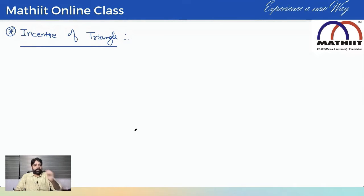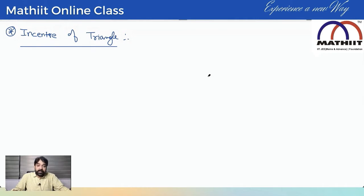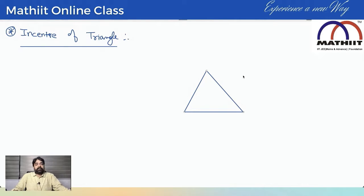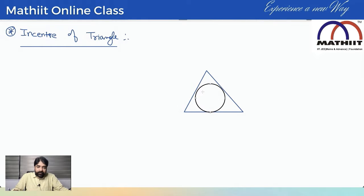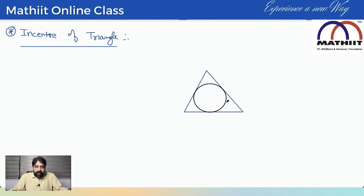In-center of triangle. First thing, what exactly is meant by in-center? In-center is a circle which touches the triangle from inside, touching all three sides. That is called in-center, in-circle. This circle's name is the in-circle of ABC.